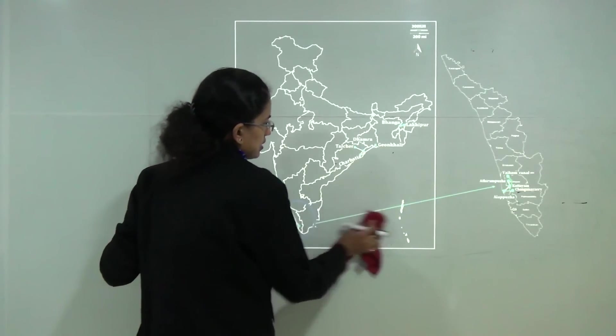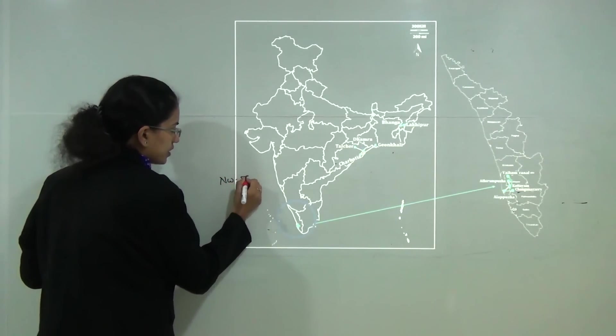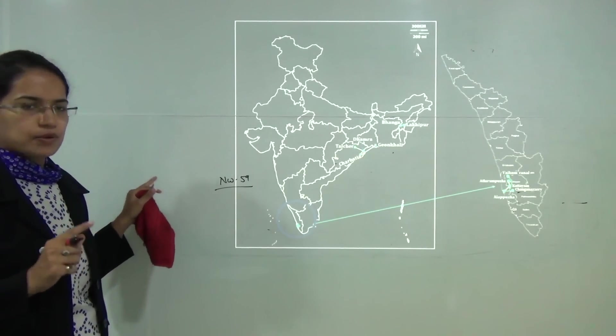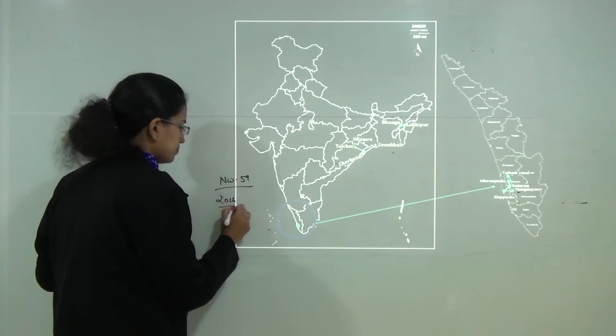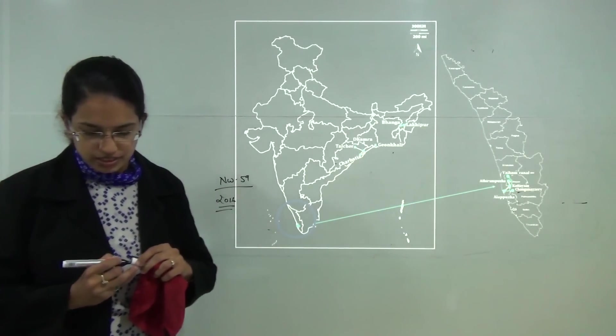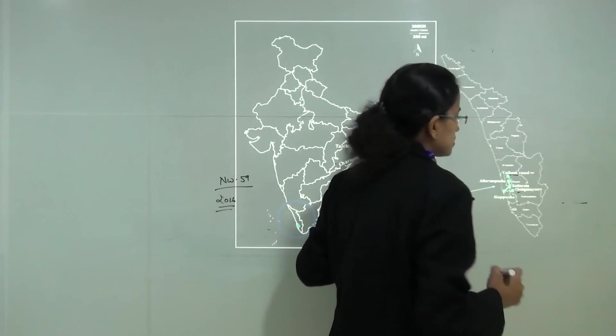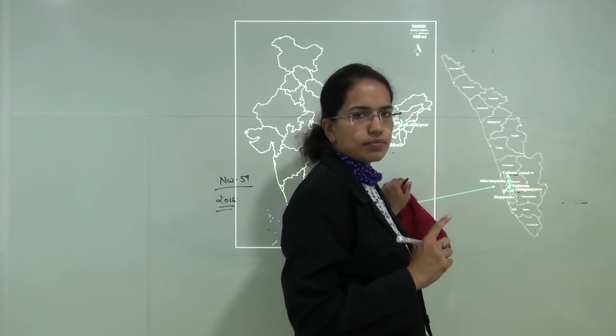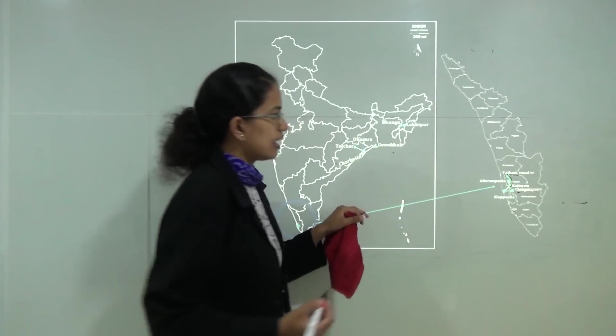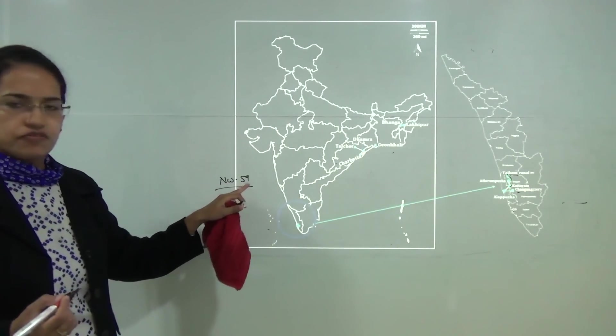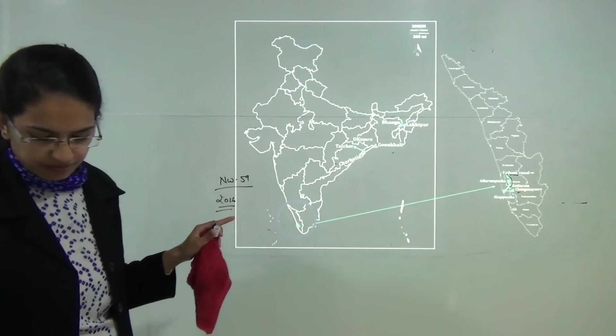The next is National Waterway 59. We have already covered numerous waterways in our map location book. This waterway has been notified under 2016 and this waterway aims to connect the region of Kottayam to Wicom. You have Kottayam to Wicom in Kerala which would be the national waterway 59 which would provide internal route for transportation with water as a main medium for transportation.